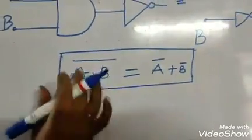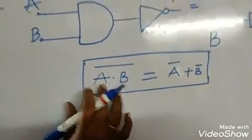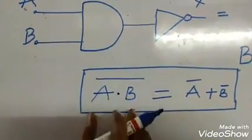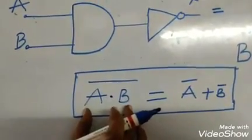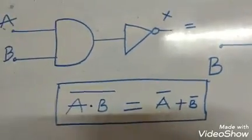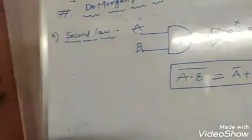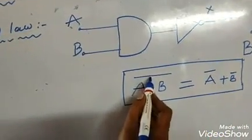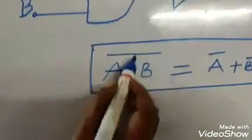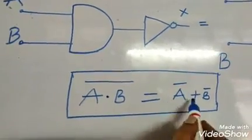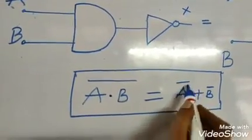The complement of the product of two variables is equal to the addition of the complements of those variables. In other words, the complement of the product of two variables is equal to the sum of the complements of those two variables. This is called the second law.